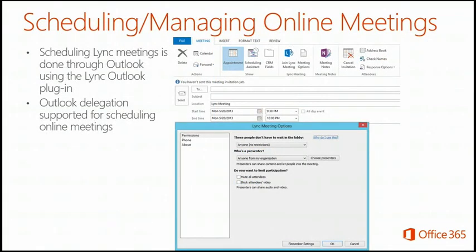How do I manage meetings? After I create a meeting, I can go into Meeting Options and create a lobby — so people have to wait before entering. Or I can allow certain persons into the meeting immediately. I have a lot of control to mute attendees so they can join but can't talk to anybody else, or block attendees from using video.